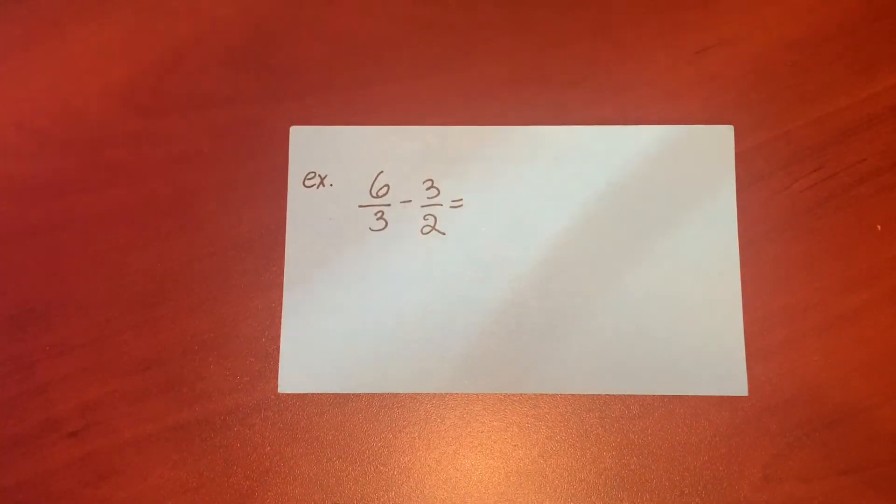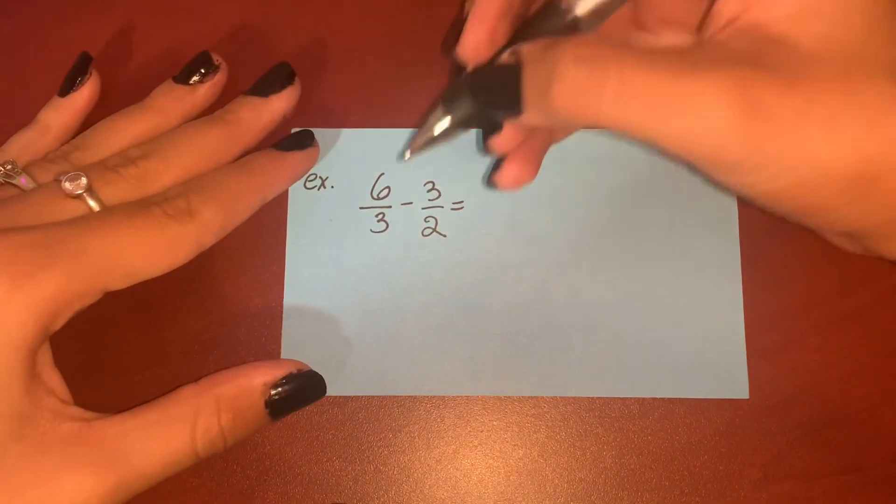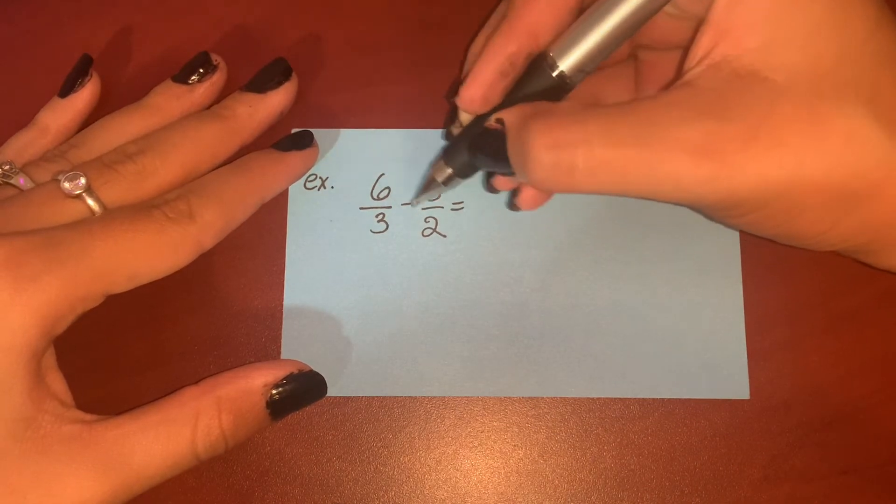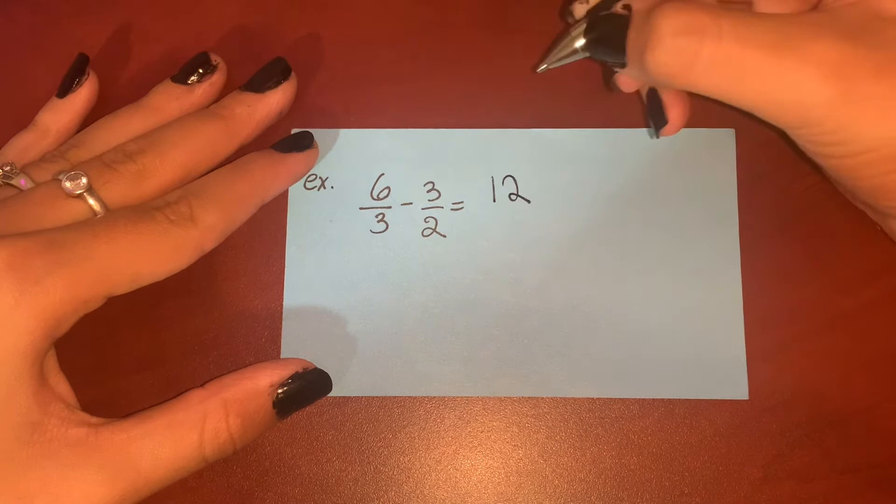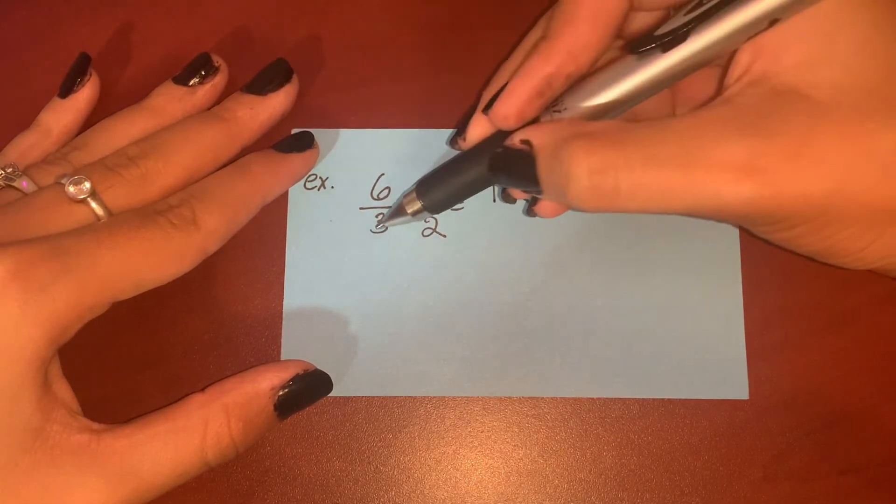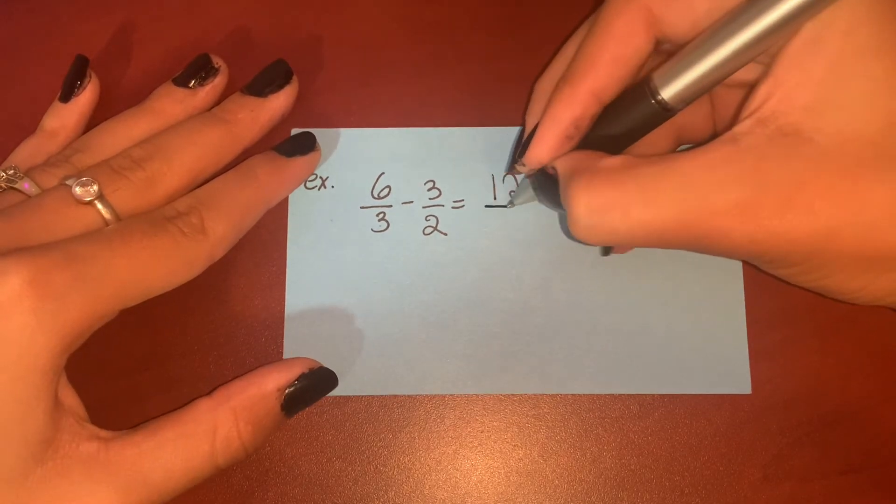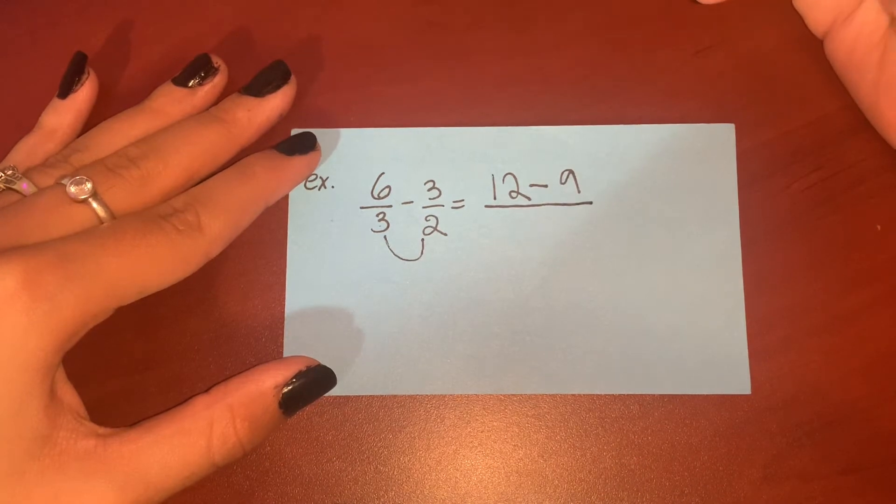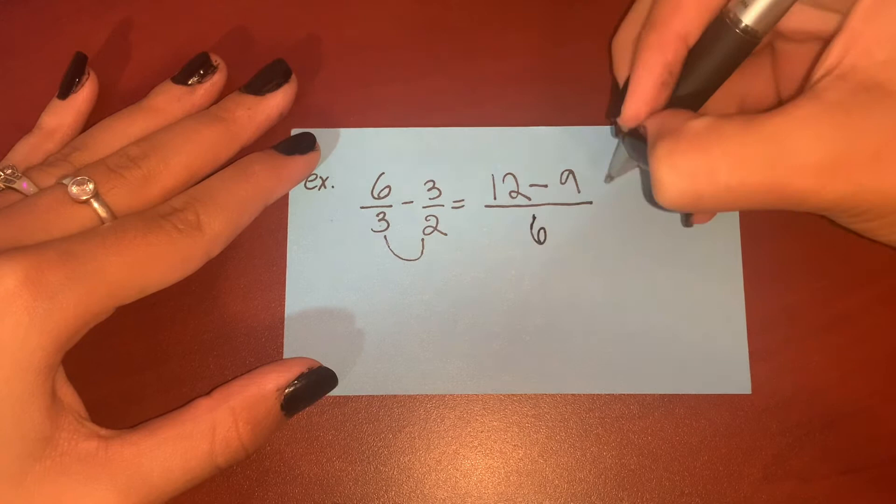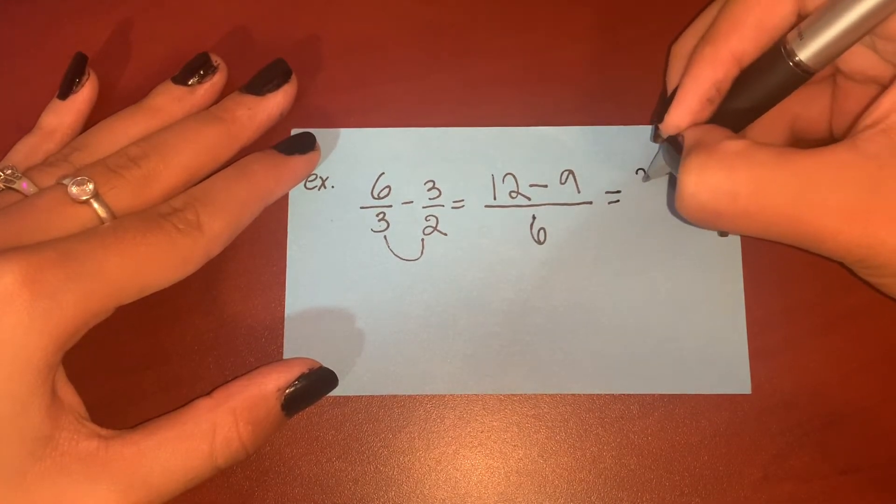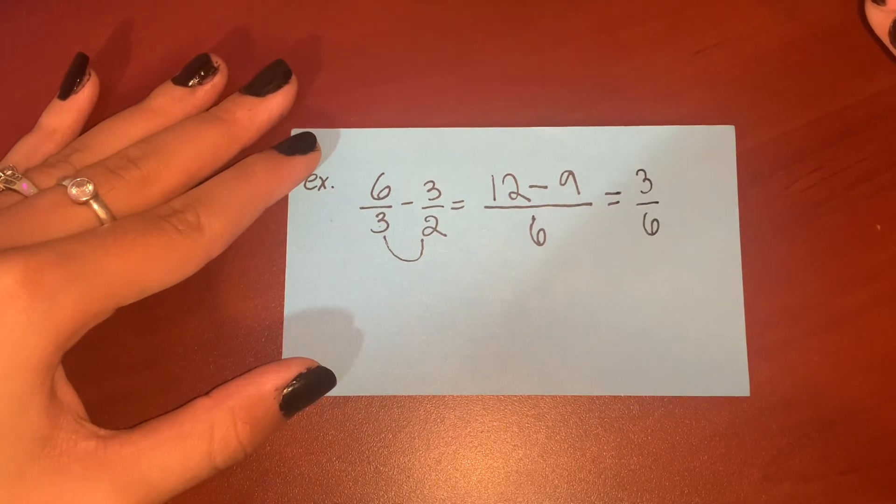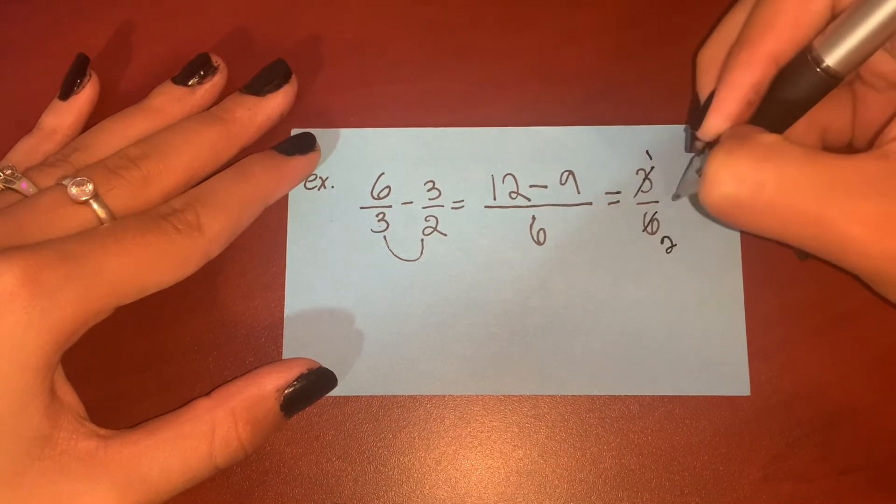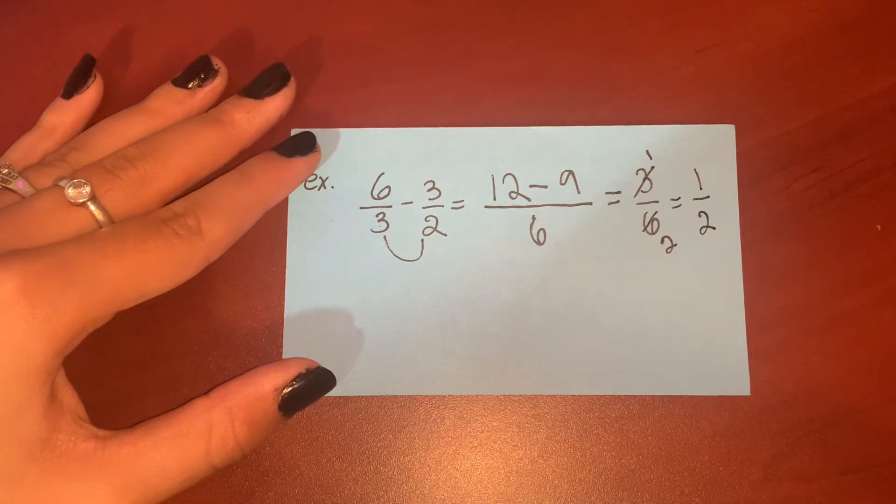The same method, the smiling method, can be used for subtraction. Again, you multiply crisscross. So 6 multiplied by 2 is 12—put the same sign. 3 multiplied by 3 is 9. The denominator will be multiplying both denominators: 3 multiplied by 2 is 6. This will give us 12 minus 9 is 3 upon 6. We can simplify this because both have in common the number three, so one-half. One-half is the answer.